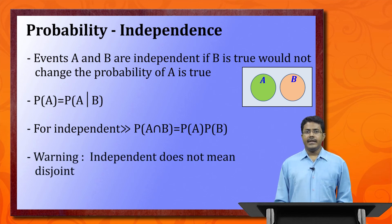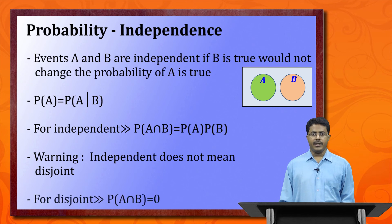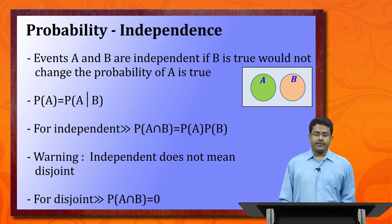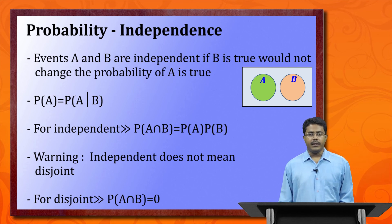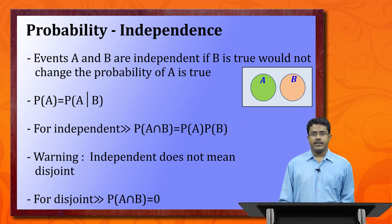Important warning: independent does not mean disjoint. Students often confuse these two concepts. For disjoint events, P(A ∩ B) = 0 — there is no intersection at all. In fact, disjoint events are actually dependent, because if we know A has occurred, we immediately know B has not occurred — so information about A gives new information about B.